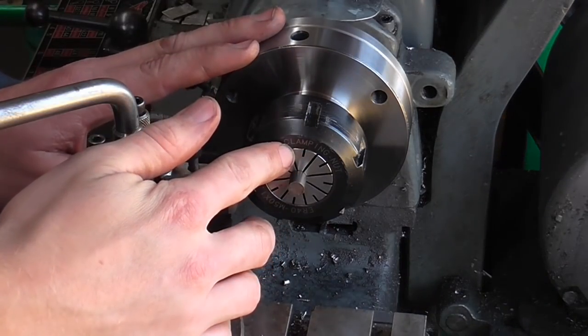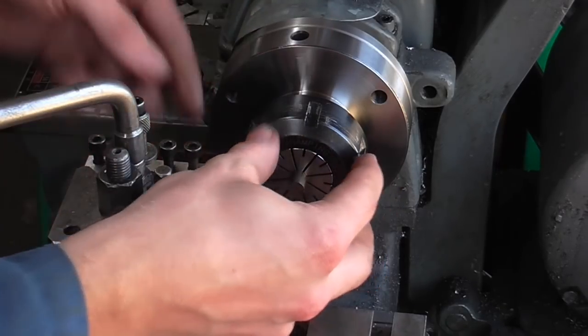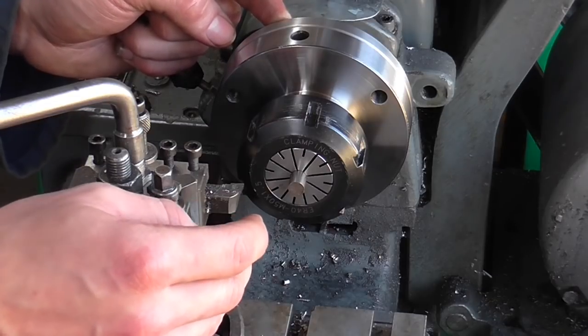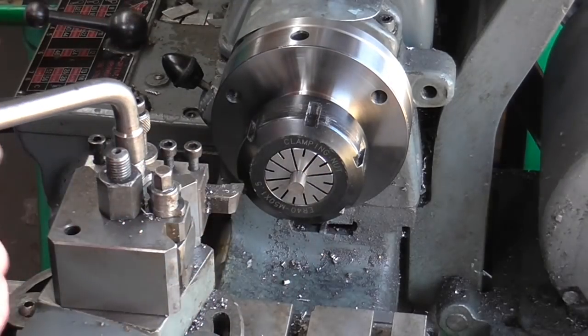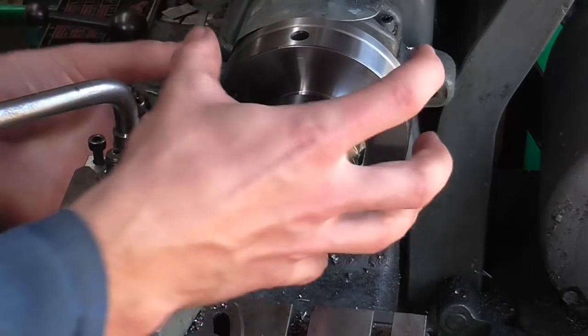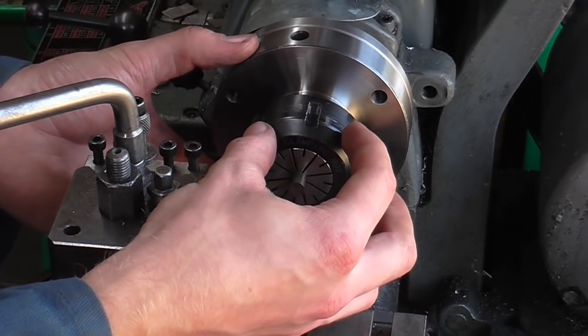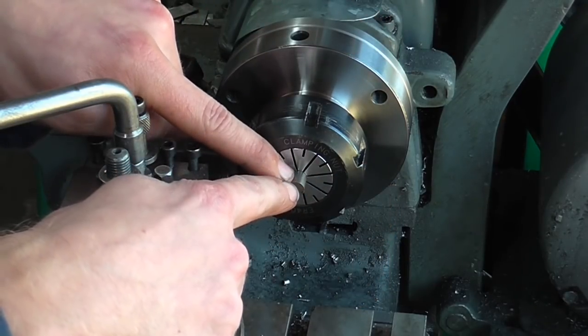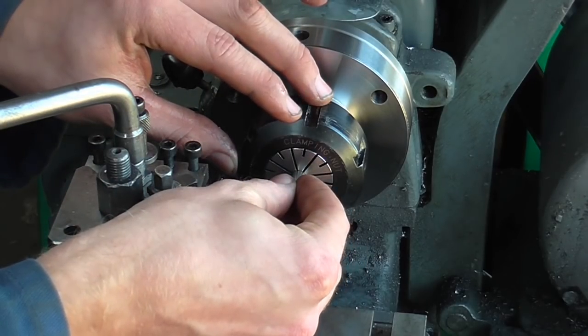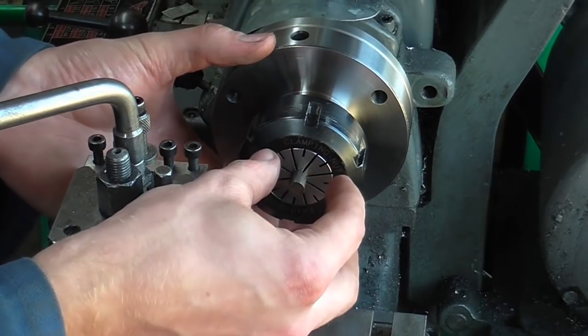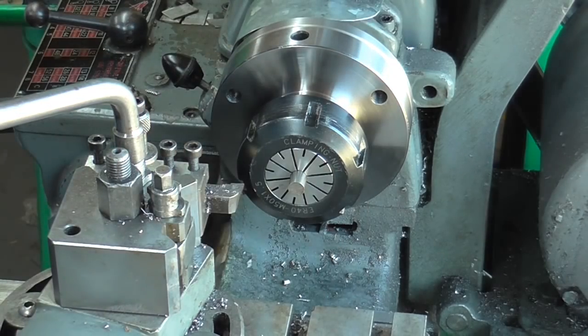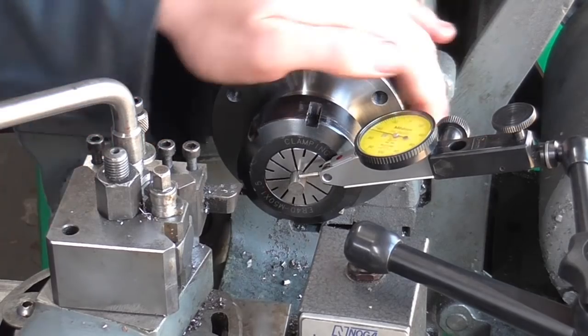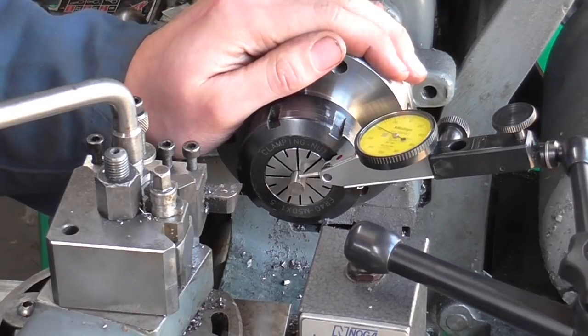Step number one is to put centers in the ends of all my stainless steel. This is an ER40 collet chuck. I did a video showing its installation, and I acted upon comments by turning the registration diameter of the back plate 0.1 mil or 4 thou undersize, making the chuck slightly adjustable. To get these centers as true as possible, I set the workpiece in the collet, then slacken these three screws and adjust the collet. With this two-micron clock, the runout is about five microns, two tenths of a thou.